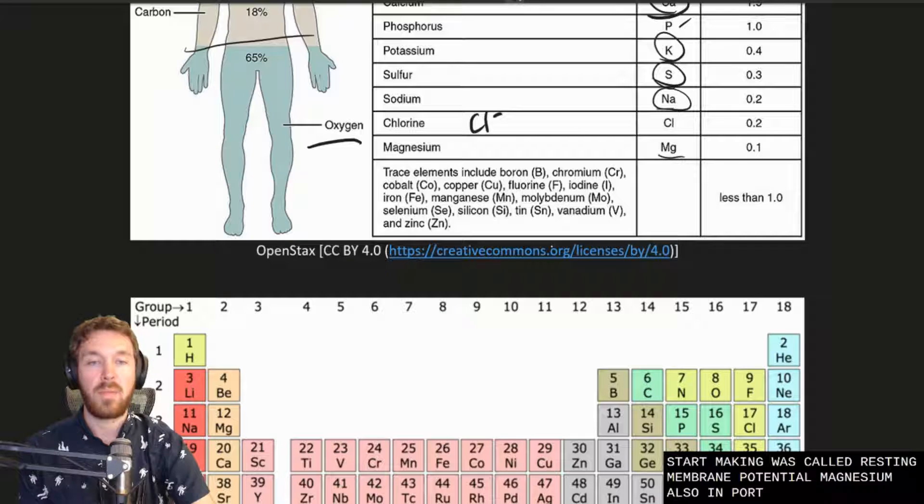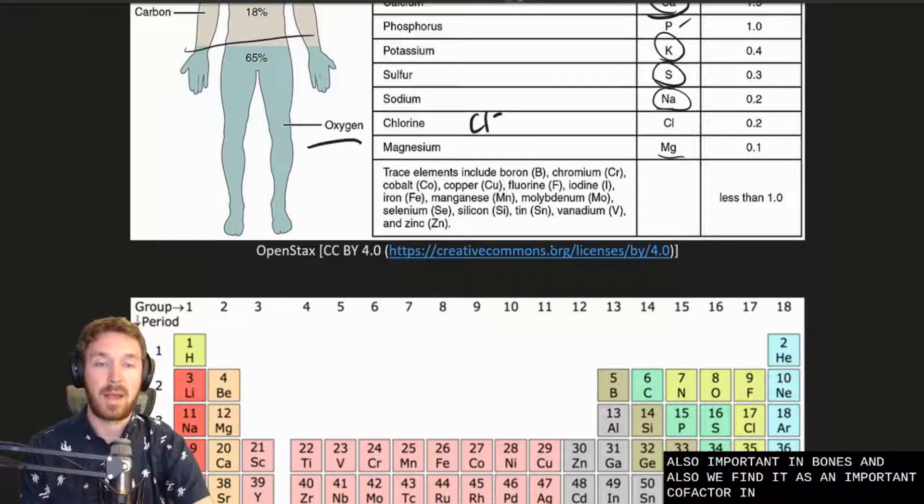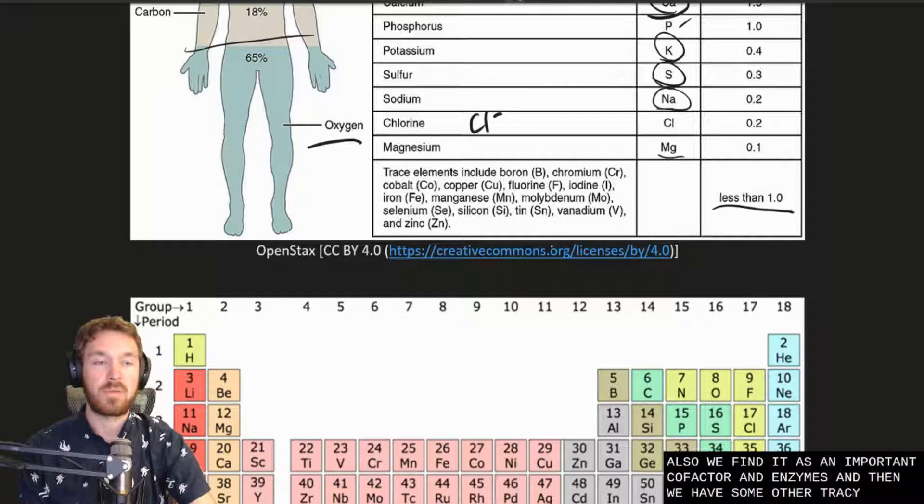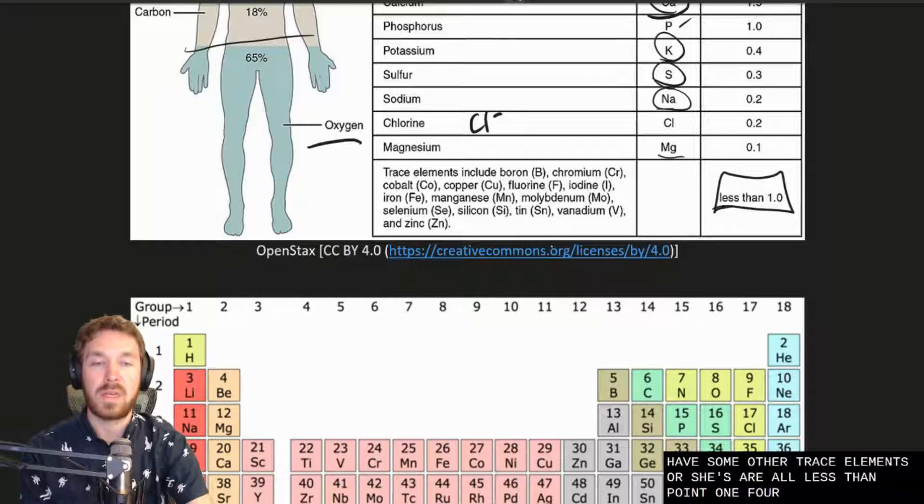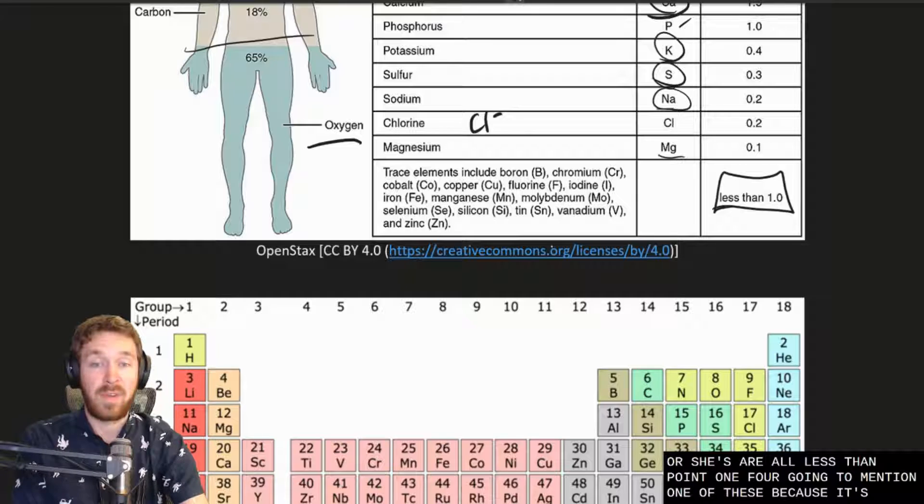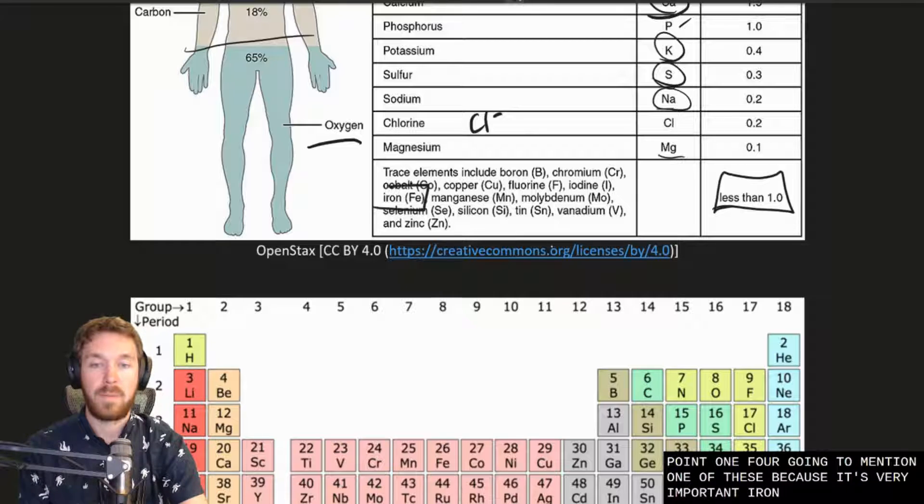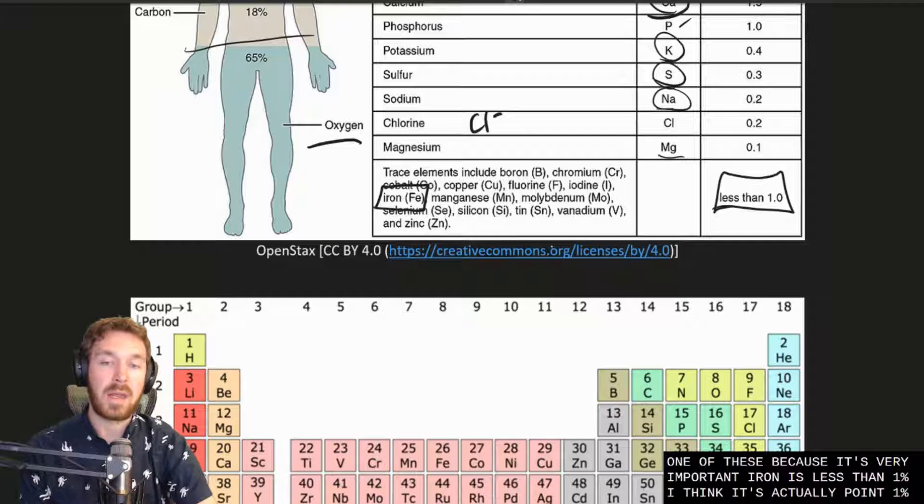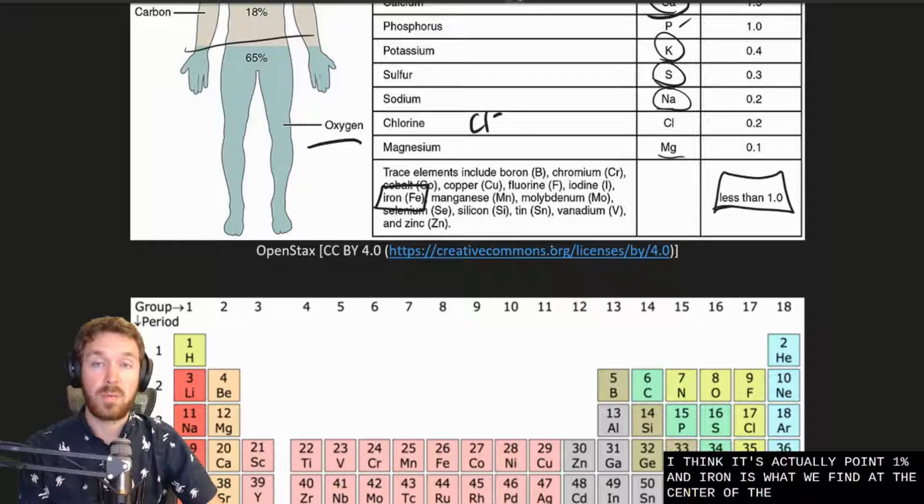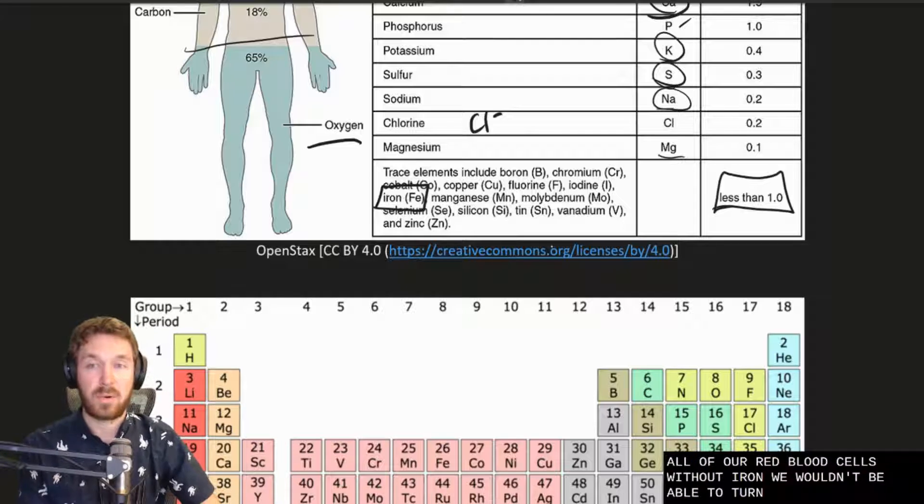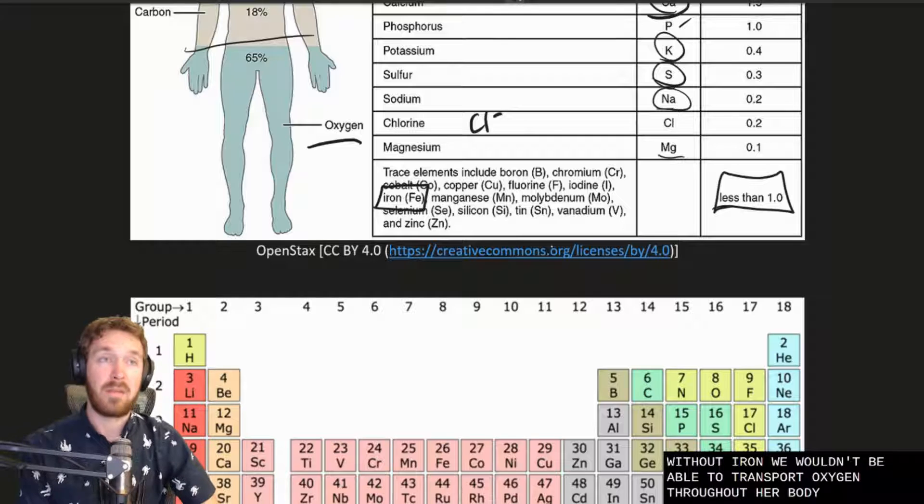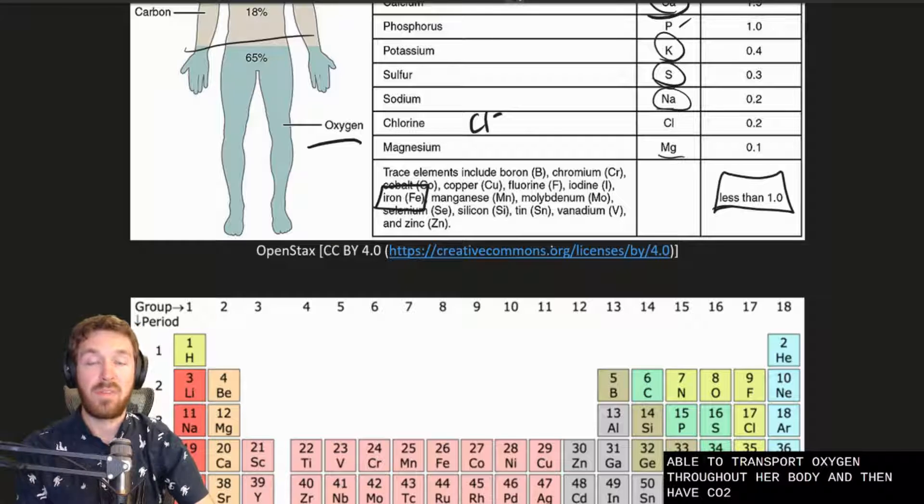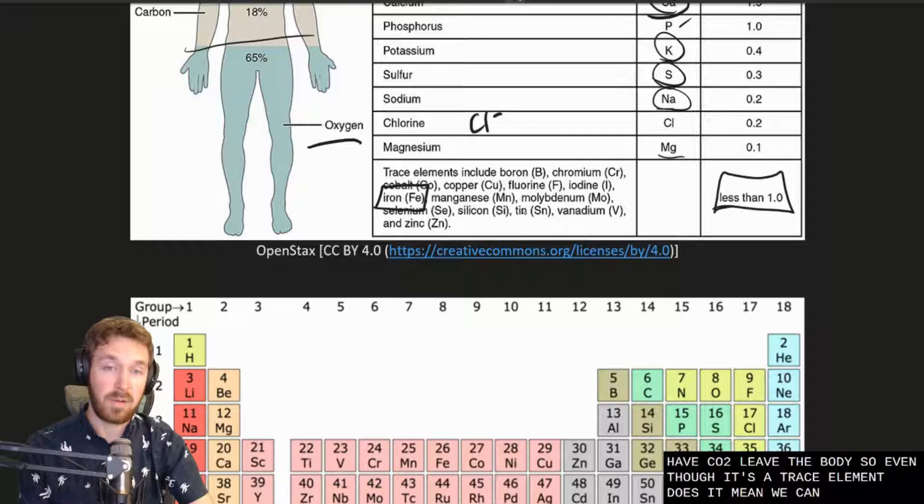Magnesium also important in bones and also we find it as an important cofactor in enzymes. And then we have some other trace elements which these are all less than 0.1 percent and I'm only going to mention one of these because it's very important. Iron is less than one percent. I think it's actually 0.1 percent and iron is what we find at the center of the hemoglobins in all of our red blood cells. And that without iron we wouldn't be able to transport oxygen throughout our body and then have CO2 leave the body. So even though it's a trace element doesn't mean we can live without it.